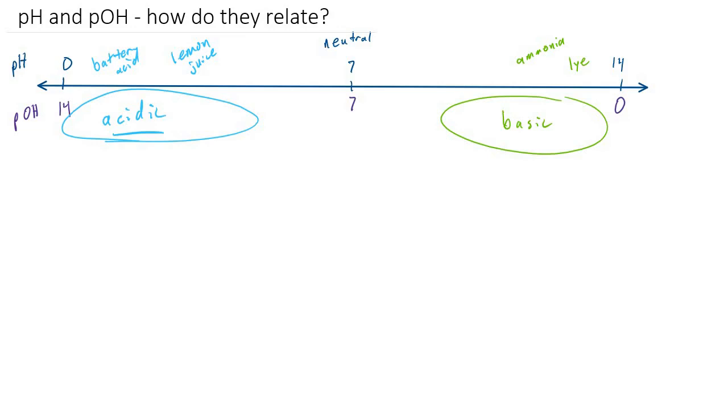So if battery acid has a pH of 1, it might have a pOH of 13. If ammonia had a pH of 11, and I'm just making up numbers here, it would have a pOH of 3. So converting between pH and pOH is actually really easy, because pH plus pOH always add up to 14. So you can do 14 minus pH to get pOH, for example.